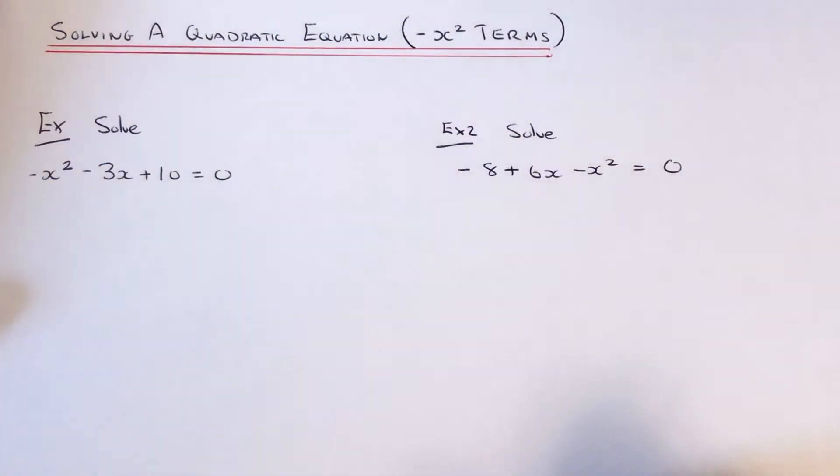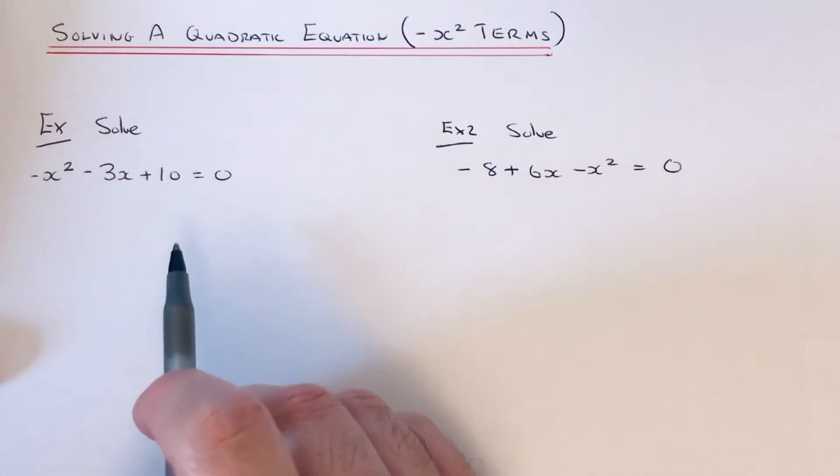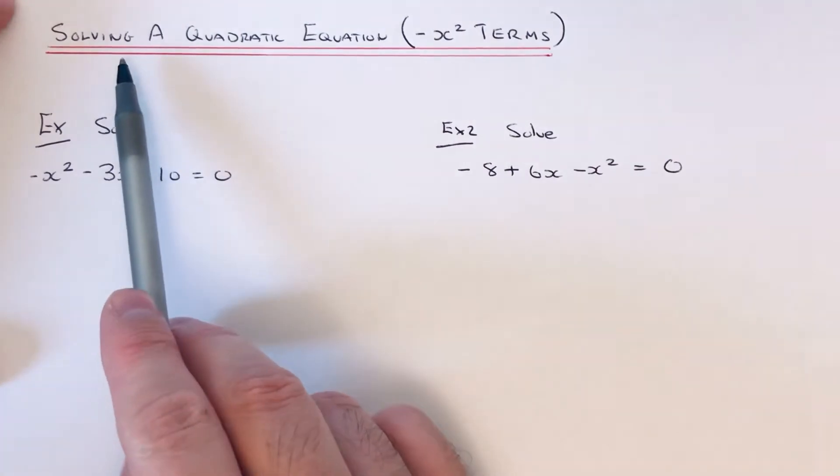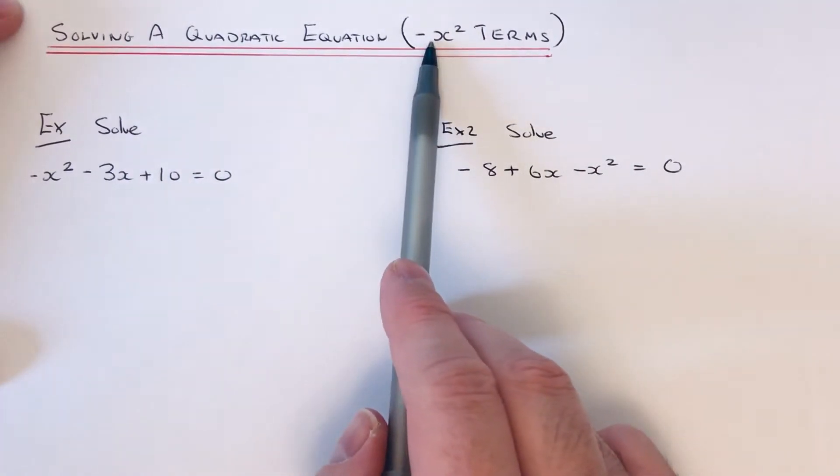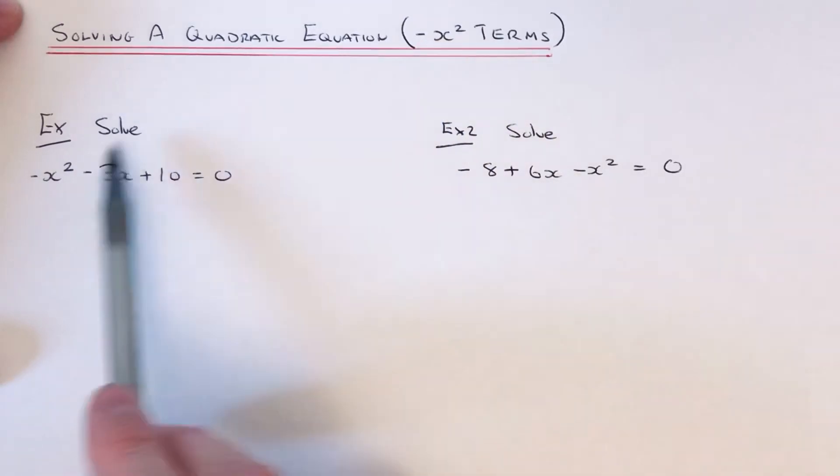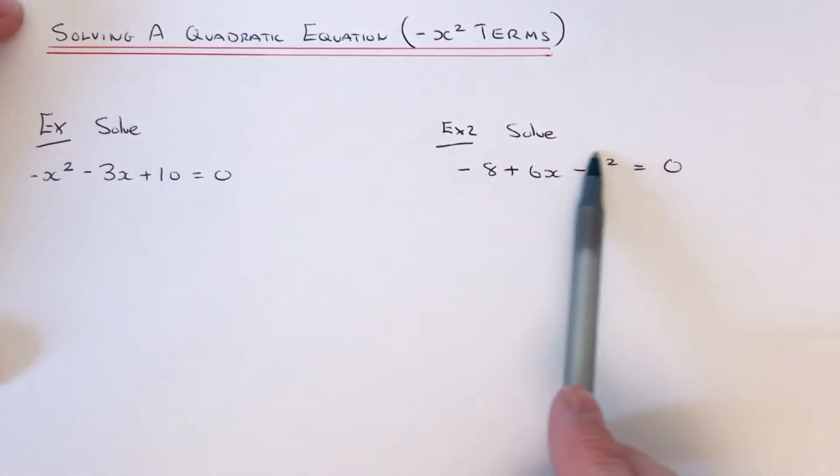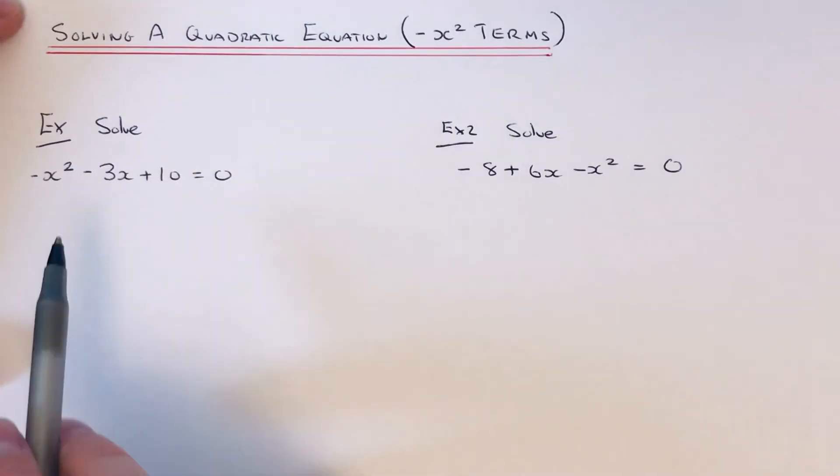Hi guys, welcome back. This is Maths3000. Today I'm going to show you how to solve a quadratic equation where the quadratic has a negative x squared term. So I've got a minus x squared in both of the equations here. So let's have a look at example 1.